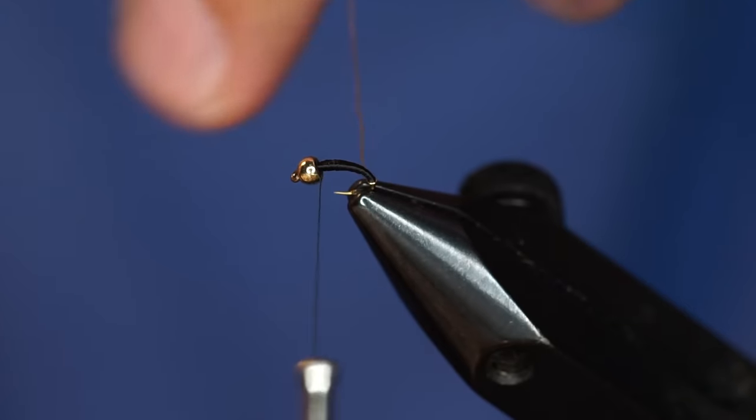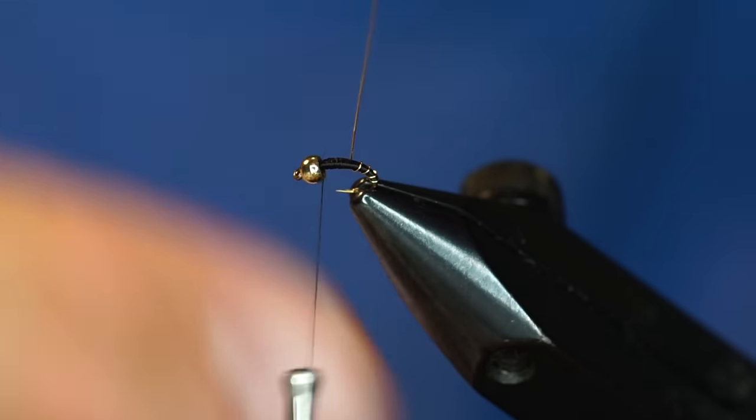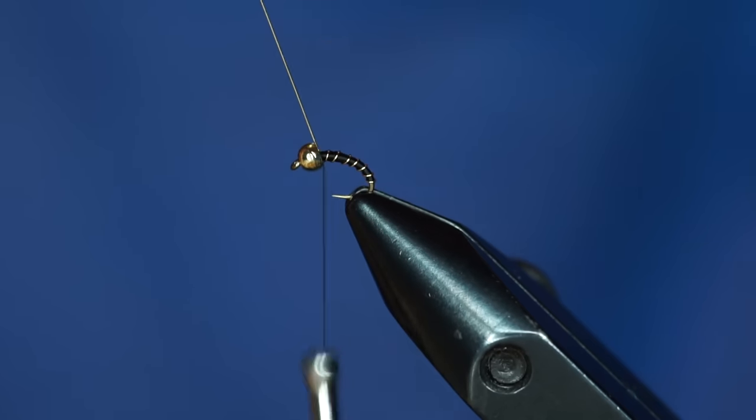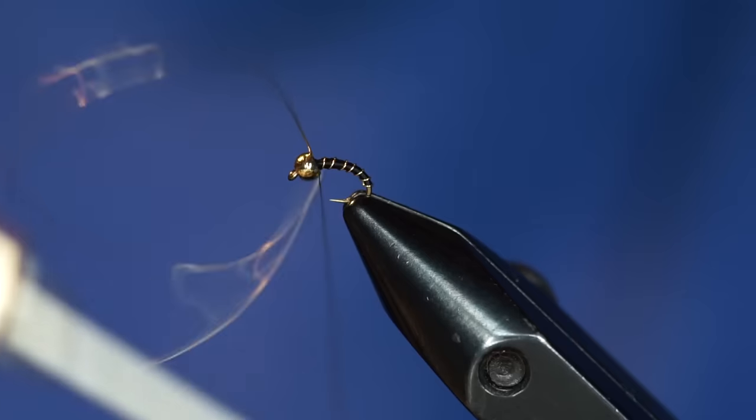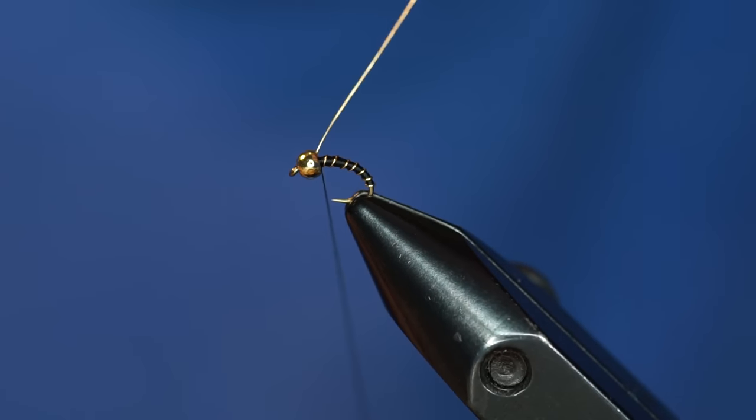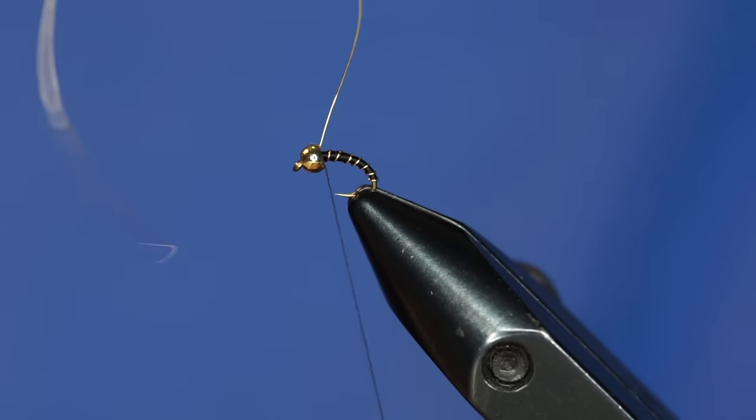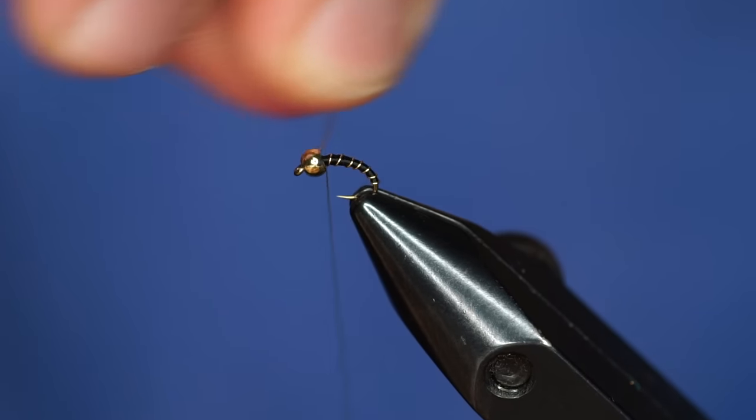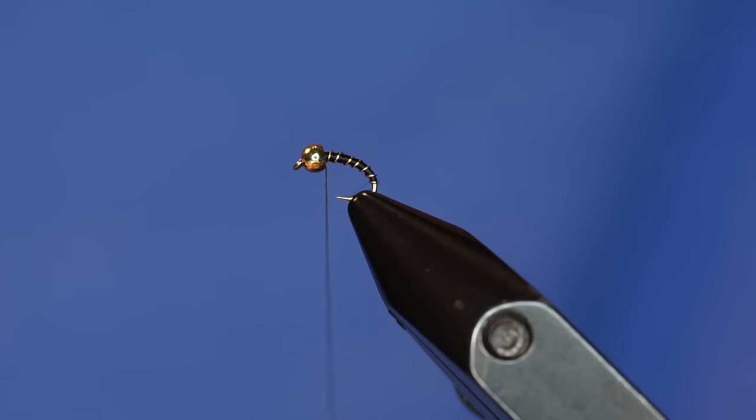I'm just going to take my wire and evenly space some wraps all the way up the hook until you get to the front. Tie off the wire with some tight wraps, and then I always come in front of the wire with some more wraps. If you do that, it will be nice and tight, so you can just take your wire and helicopter your wire so that it just breaks right off.